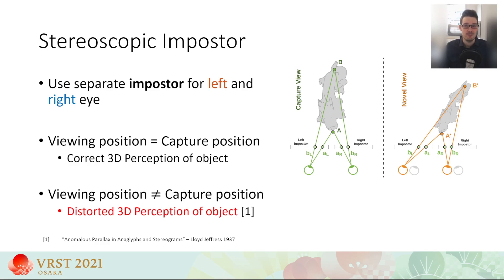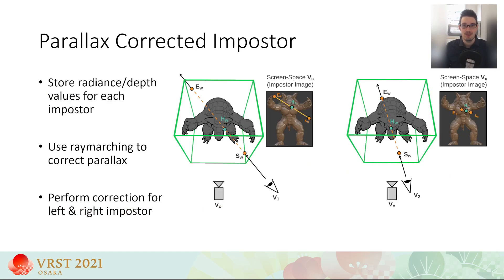However, as the user moves away from the capture viewpoint, the perceived shape of the object becomes increasingly distorted. To solve this issue, the correct parallax movements of the depicted surface have to be considered. We achieve this by storing additional depth values for our impostors and performing a ray-matched parallax correction step. When rendering an impostor from a novel view, we first intersect the view ray with the object's bounding box. The two intersection points are then transformed into the screen space of the capture viewpoint. Here, the two transformed points define the search interval for the ray-marching step, which is then performed to find the surface point visible from the novel view. This correction step is separately performed for both stereoscopic impostors.